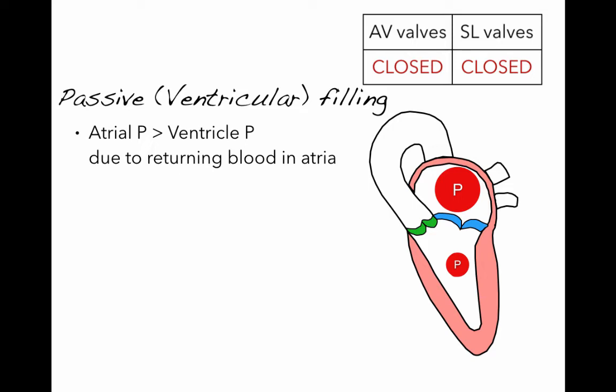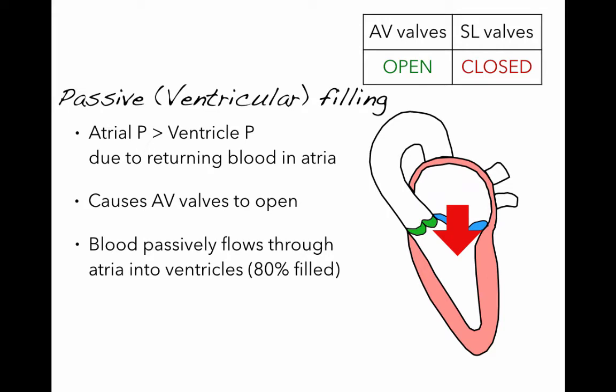Remember, if a chamber is not referred to, it's always the ventricle. So in this phase, atrial pressure is greater than ventricular pressure because blood is returning to the atrium. This will cause the AV valves to open up, and blood will flow passively through the atria into the ventricles. This phase is responsible for about 80% of ventricular filling — so 80% of blood will just passively flow from the pulmonary veins through the atrium into the ventricles.